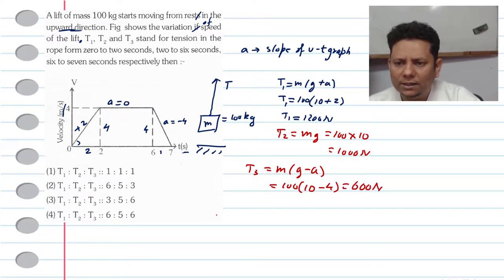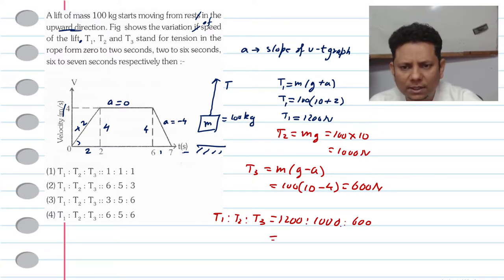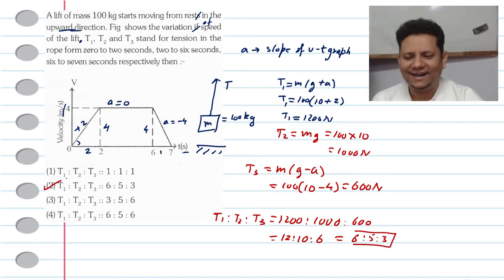Now, if we talk about ratio, then we can say T1 is to T2 is to T3, that will be equal to 1200 is to 1000 is to 600. Some people get confused with ratios, so let me give you the steps. First divide all by 100, so 12 is to 10 is to 6. Then we can say the final ratio of T1, T2, T3 will be 6 is to 5 is to 3. Hence option number 2 would be the right answer.